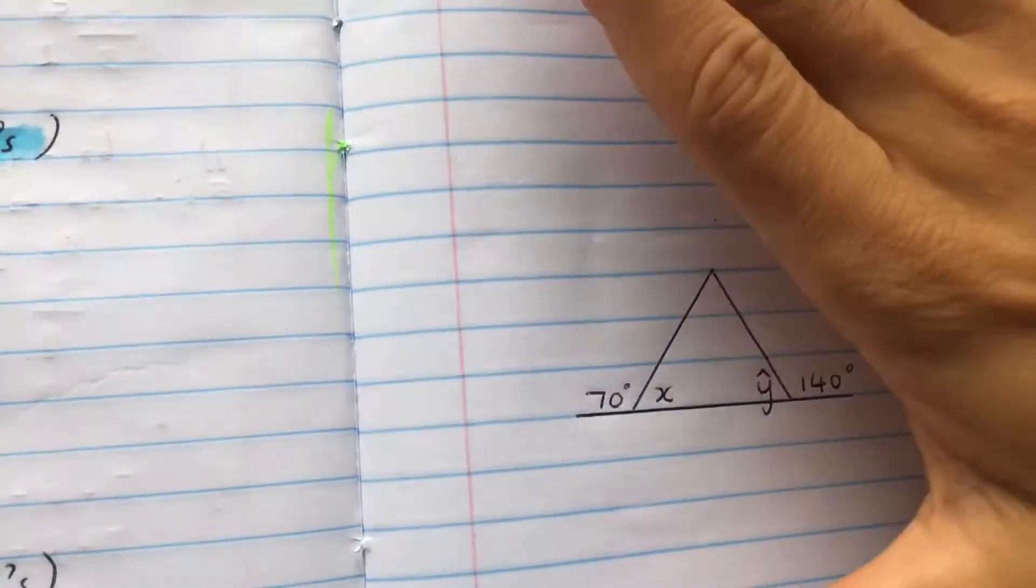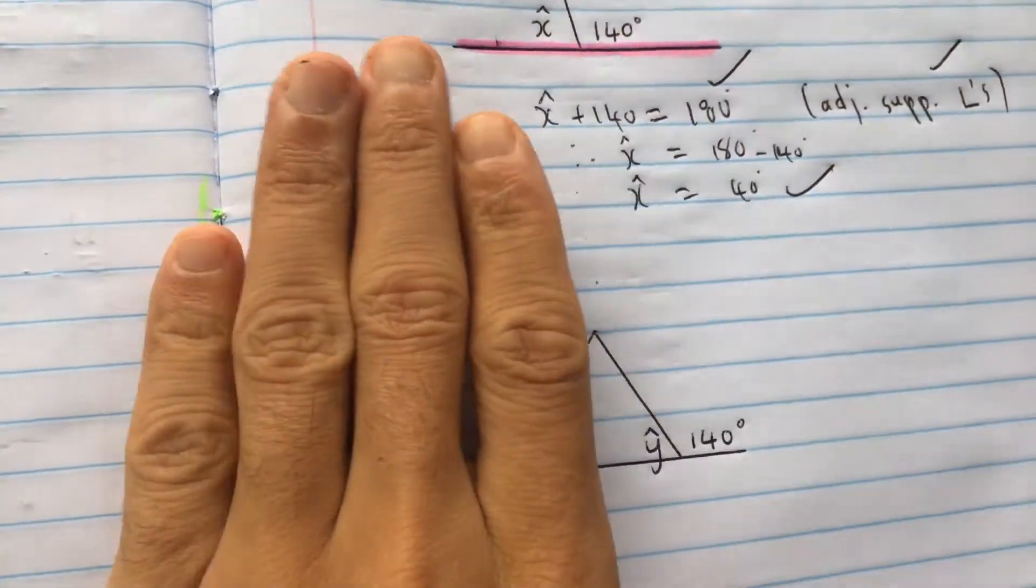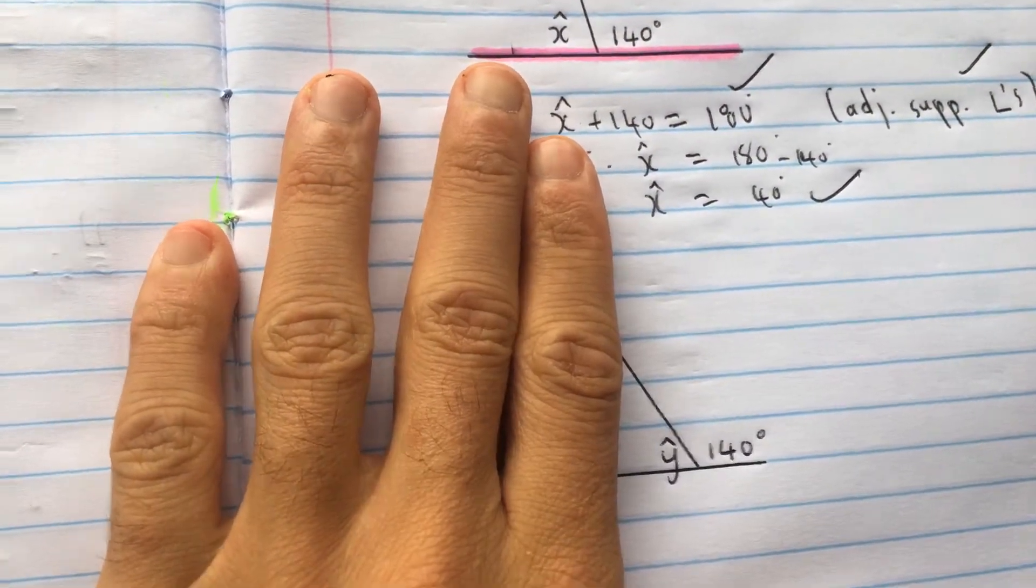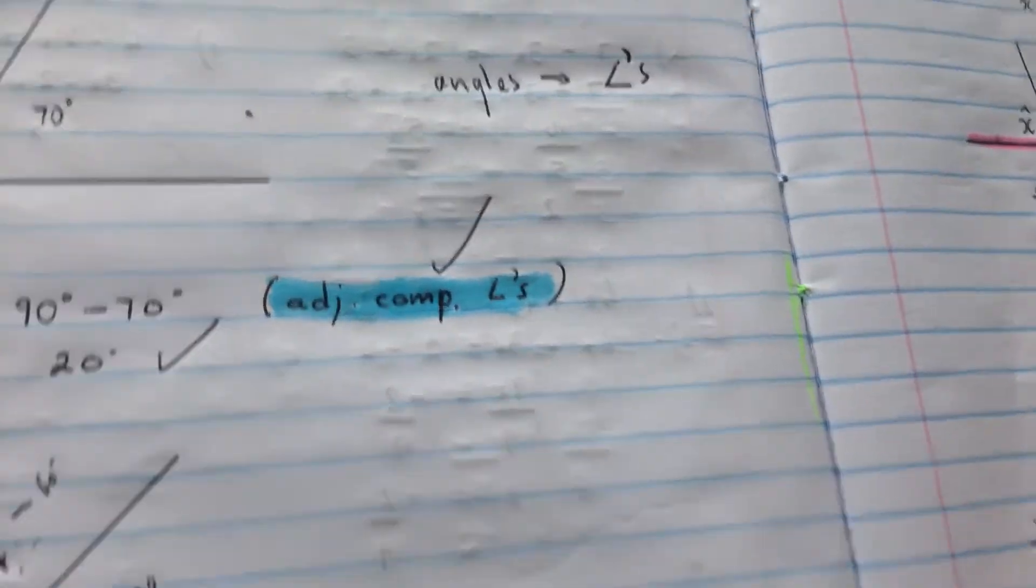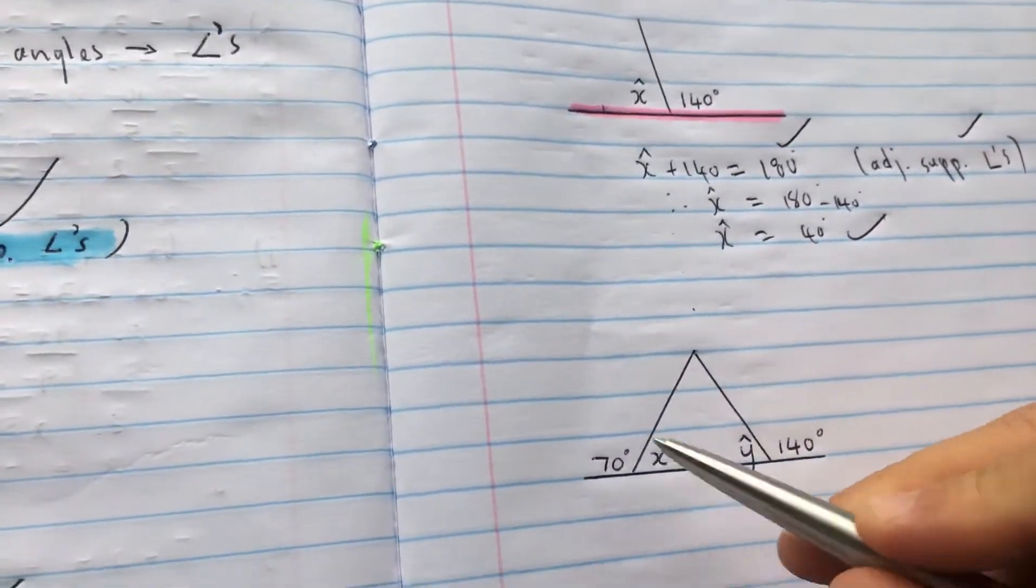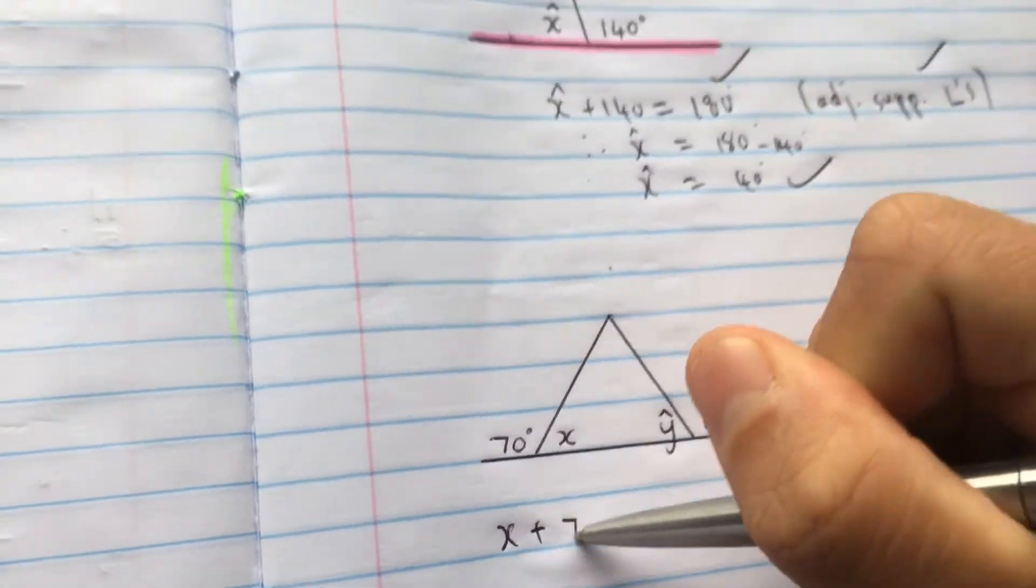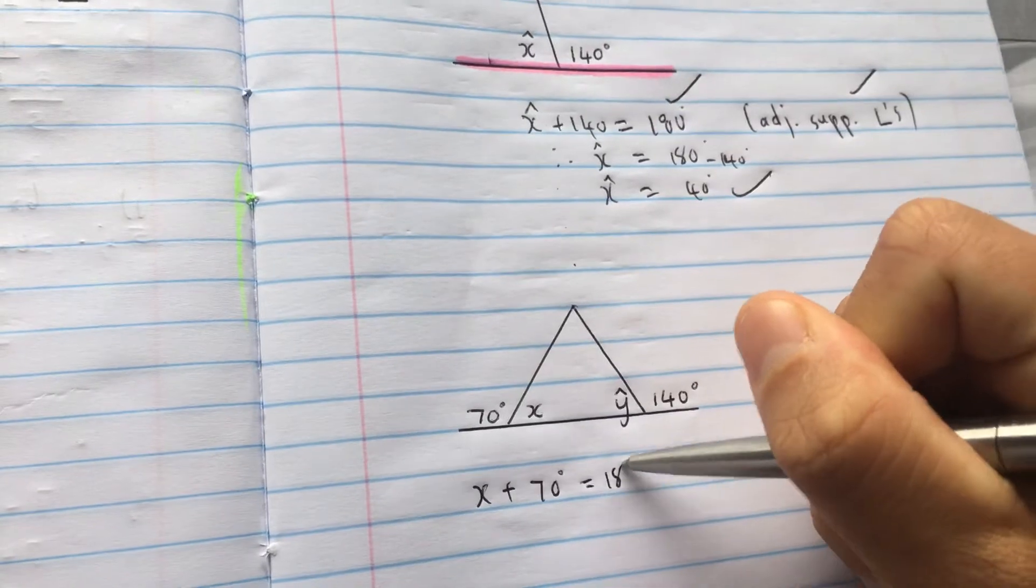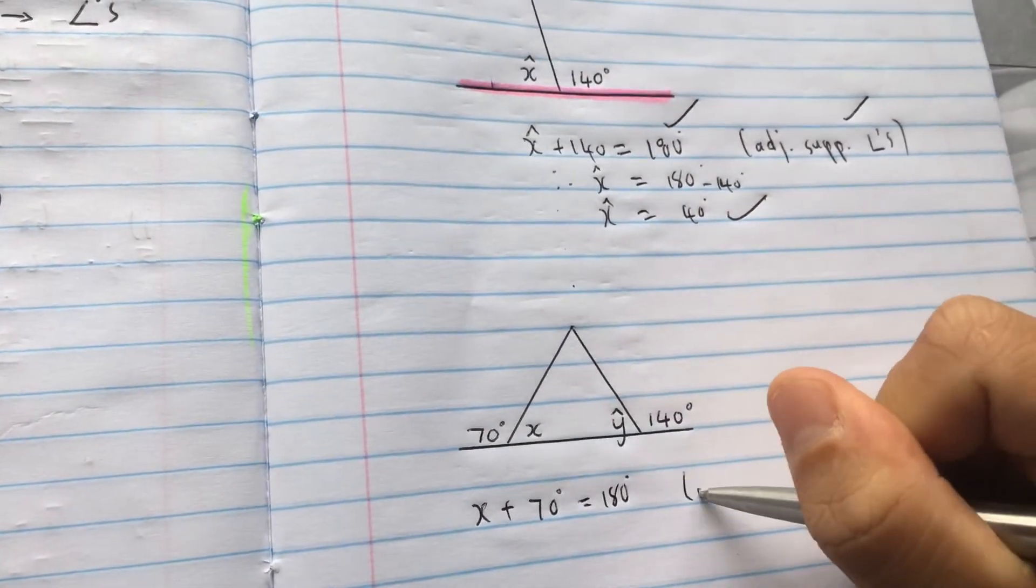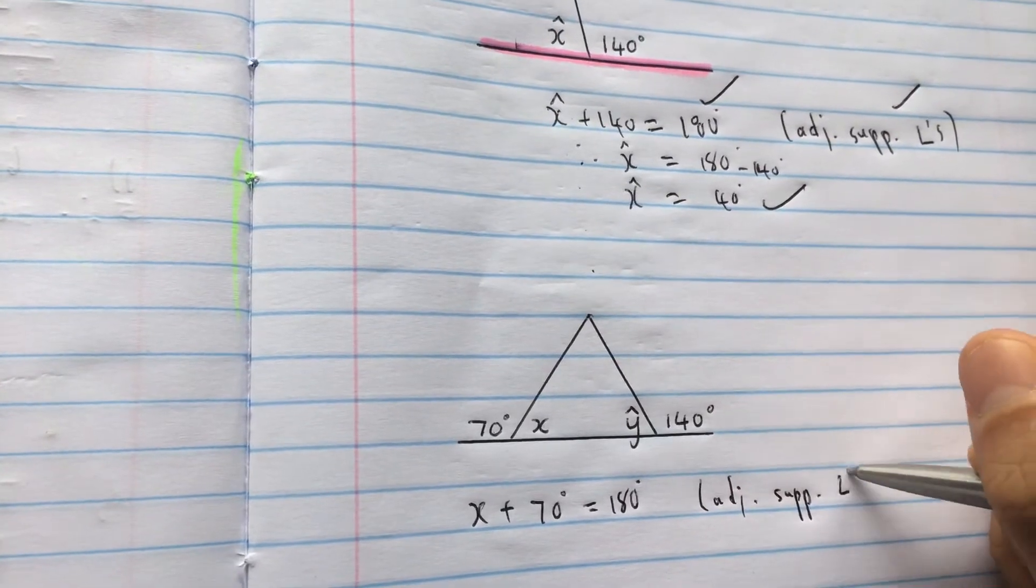So just to recap from that video, we broke off that adjacent supplementary and then on that side adjacent supplementary. So let's work these out. So I'd say that plus that equals 180. So x plus 70 equals 180 degrees. What's my reason?